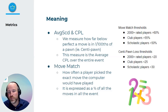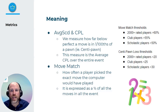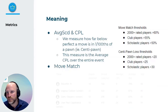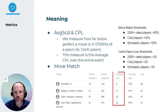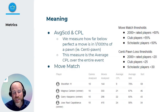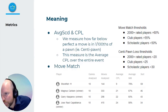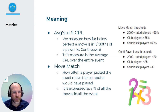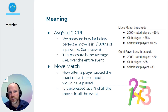For centipawn loss thresholds: occasionally players over 2000 will score a centipawn loss in a game below 20 — it's rare but happens. Club players scoring below 25 and scholastic players below 30 in a single game is very rare. If you see a move match above 60%, you start sniffing around. If someone has a centipawn loss below 20, you look deeper. When looking at statistical information, please consider the player's rating and true strength — not just their listed rating.